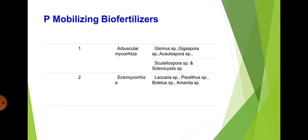Phosphorus mobilizing biofertilizers are Arbuscular Mycorrhiza, including Glomus species, Gigaspora species, Acaulospora species, Scutellospora species, and Sclerocystis species; and Ectomycorrhiza, including Laccaria species, Pisolithus species, Boletus species, and Amanita species.